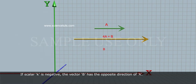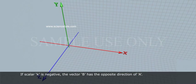If scalar K is negative, the vector B has the opposite direction of A.